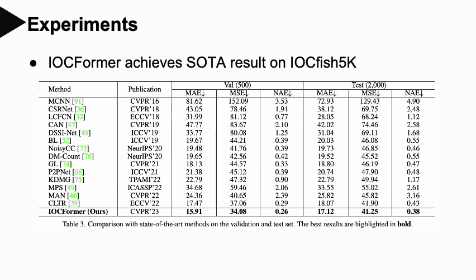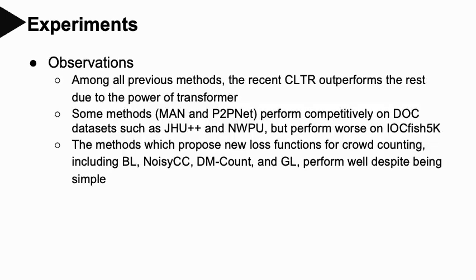For benchmarking purposes, we selected 14 mainstream methods for object counting and carefully evaluated them on IOC Fish 5K. Our method outperforms all existing approaches on this challenging dataset. From the experiments, we have the following observations: first, among all previous methods, the recent CLTR outperforms the rest due to the power of transformers. Second, some methods like MAN and P2PLAT perform competitively on dense counting datasets such as JHU++ and NWPU, but perform worse on IOC Fish 5K. Third, methods which propose new loss functions for crowd counting, including BL, LOISCC, DMCOUNT, and GL, perform well despite being simple. We also compare quantitative results between our method and some existing approaches.